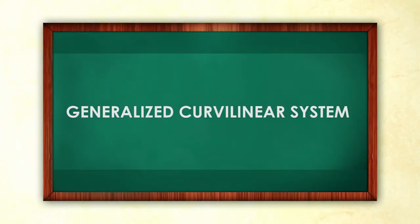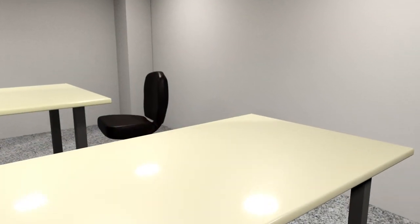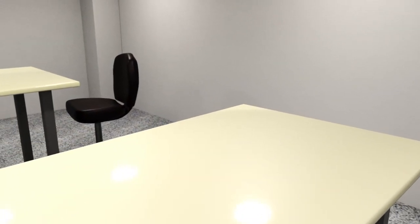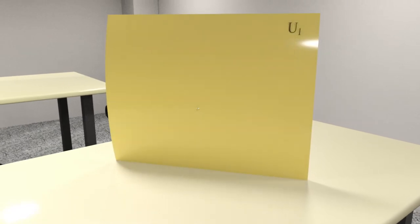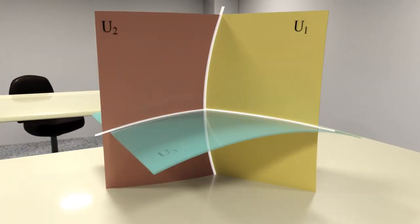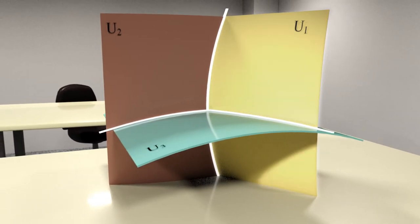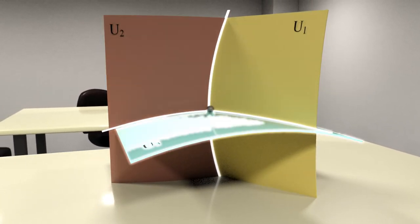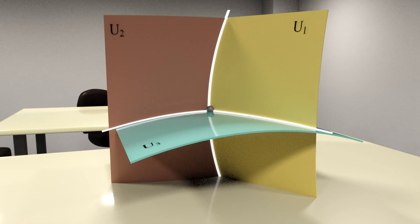Generalized Curvilinear System. The coordinate systems used in electromagnetic theory are derived from the generalized curvilinear system, where the position of any point in space is determined by the intersection of the surfaces U1, U2, and U3, also called coordinate surfaces.